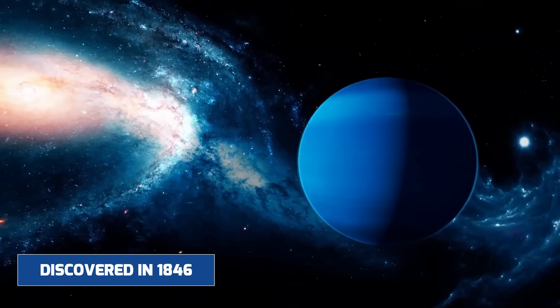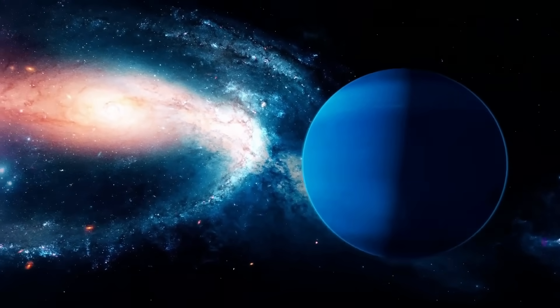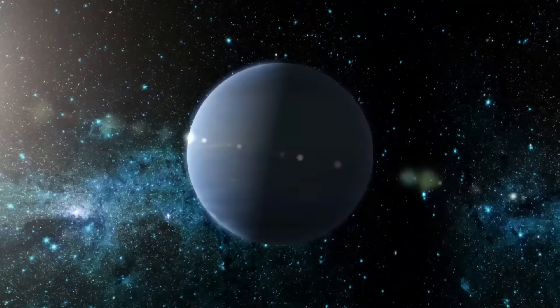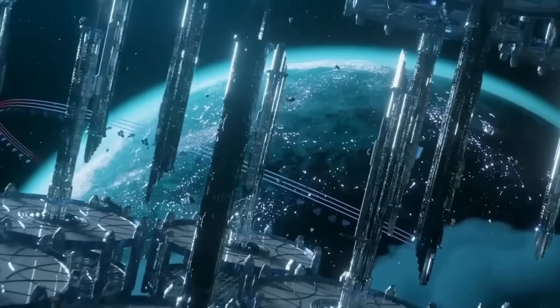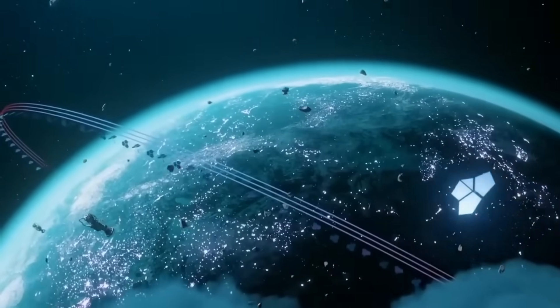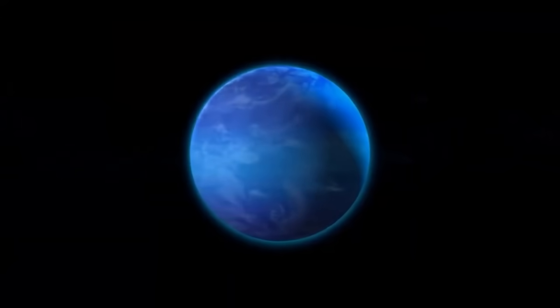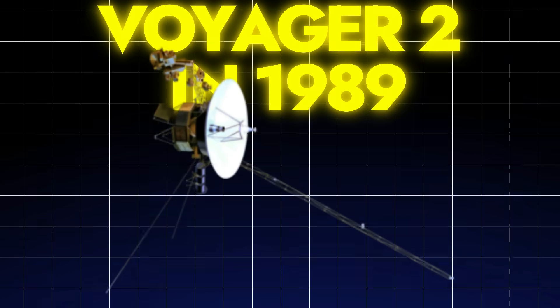It was discovered in 1846 not by direct observation but by mathematics. Its position was predicted due to irregularities in Uranus' orbit. Since then, Neptune had been understood through a steady trickle of telescope data and a singular flyby by Voyager 2 in 1989.